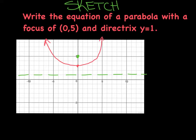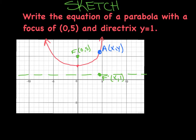Now I'm going to pick any random point and call it A. Because it's random, I need to keep it generic like (x, y). We already knew that the focus was at (0, 5). If you start at point A and go straight down, you land at f-prime, which has the same x-coordinate as point A but y-coordinate of 1 because it falls on the line y equals 1. I want to find the distance between f and A, and then the distance from A to f-prime. They should be congruent, and I'm going to set those two distances equal to each other.